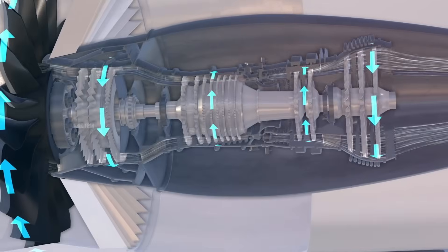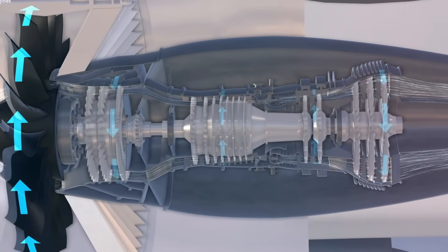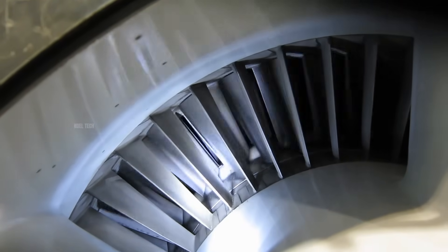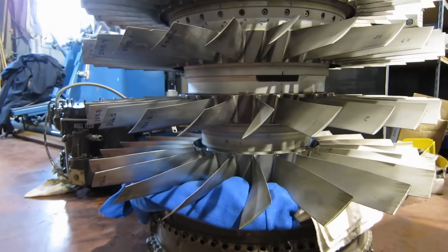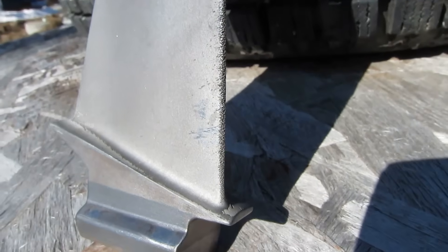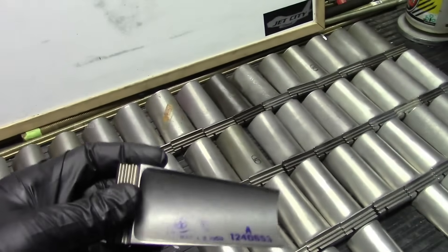However, we haven't yet discussed the materials used to manufacture these components. In this video, we will focus specifically on the materials used to make gas turbine blades, the parts that are directly exposed to the intense heat of combustion, and how they are manufactured.